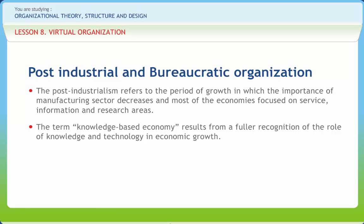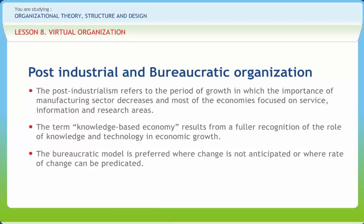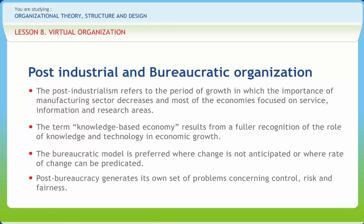A bureaucracy is a form of organizational structure in which people can be held accountable for their actions, because they are required to act in accordance with well-specified and agreed-upon rules and standard operating procedures. Weber believed bureaucracy could assist organizations and proposed a set of organizational characteristics to ensure efficient functioning in both government and business settings. The bureaucratic model is preferred where change is not anticipated or where the rate of change can be predicted. Post-bureaucracy generates its own set of problems concerning control, risk and fairness, and is used in two senses in organizational literature — one generic and one more specific. Weber's bureaucratic model can serve equally well in analyzing either the functional or dysfunctional ramifications of organization structure.